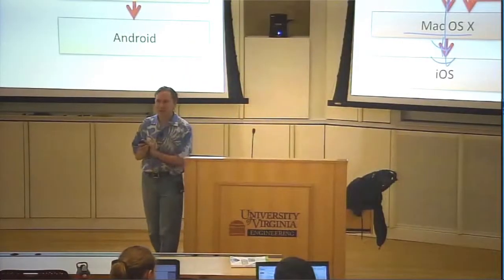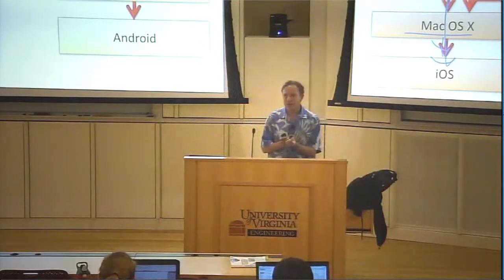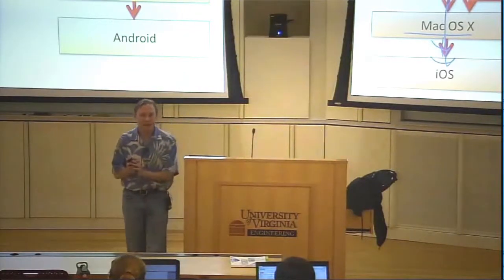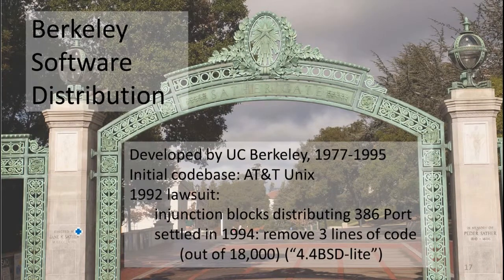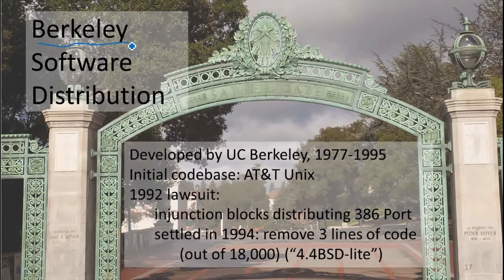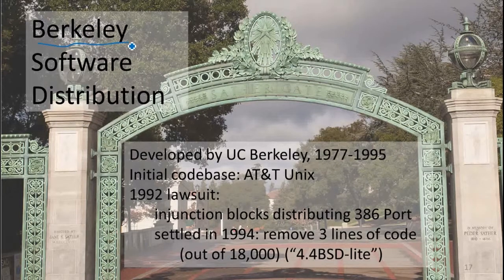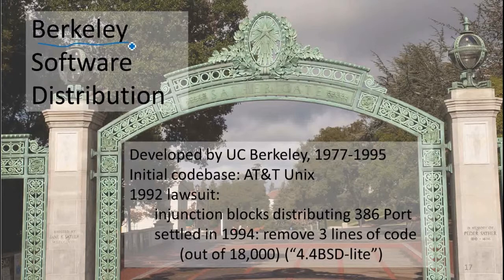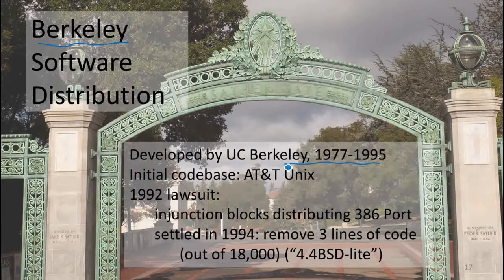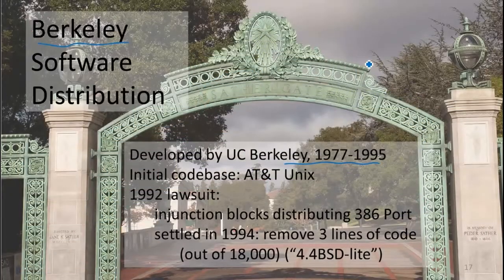Before I show you how bad the code is, I should explain how good and important BSD was. BSD stands for Berkeley Software Distribution. Berkeley had a project to develop this operating system and they gave it away. This was back in the 70s and 80s when universities, at least public ones, thought they had some mission to serve the public. They put a lot of resources and developed this free operating system, giving the source code away. They started with the code that AT&T gave away in an early version of UNIX and over the years developed that code base.